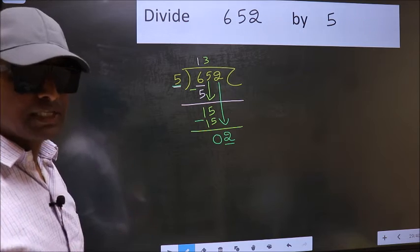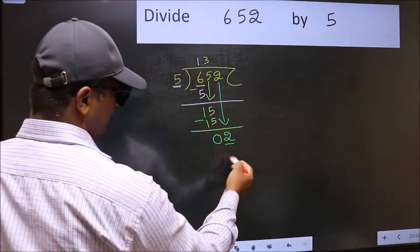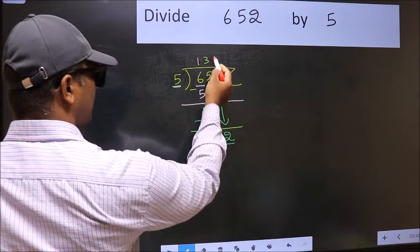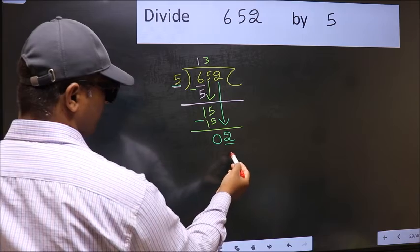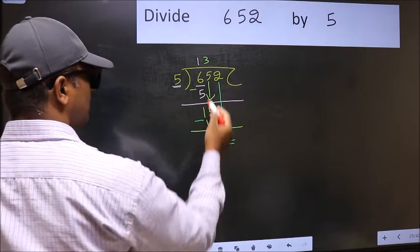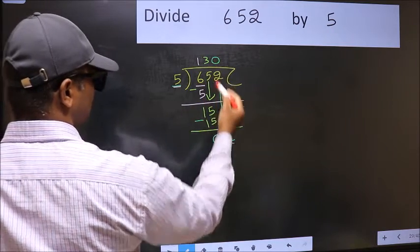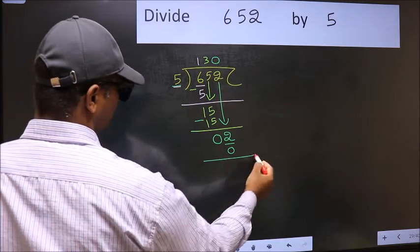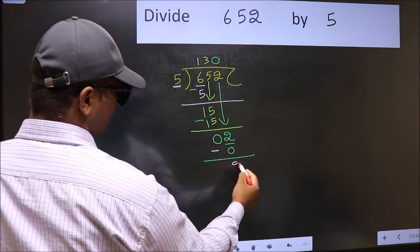Instead, what you should do is, which number should we write here? If I take 1 here, we will get 5. But 5 is larger than 2. So what we should do is, we should take 0. So 5 into 0, 0. Now you should subtract. 2 minus 0, 2.